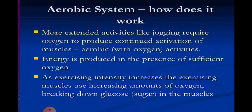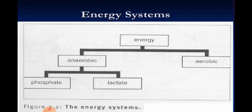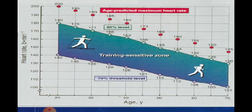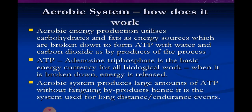More extended activities like jogging require oxygen to produce continuing muscle activation. Energy is produced in the presence of sufficient oxygen. As exercise intensity increases, the exercising muscles use increasing amounts of oxygen, breaking down glucose in the muscle. Aerobic energy production utilizes carbohydrates as energy sources, broken down to ATP with water and carbon dioxide as by-products. ATP — adenosine triphosphate — is the basic energy currency for all biological work. The aerobic system produces large amounts of ATP without fatiguing by-products, making it the system used for long-distance or endurance activities.